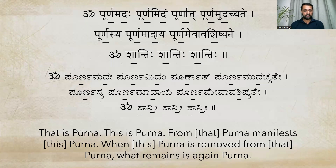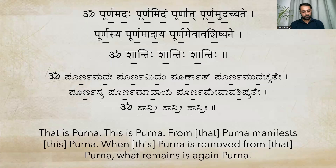That is Purna. This is Purna. From Purna manifests Purna. I have added 'that' and 'this' here because in the very first line it is talking of two Purnas explicitly — that Purna and this Purna. From that Purna manifests this Purna, and when this Purna is removed from that Purna, what remains is again Purna.